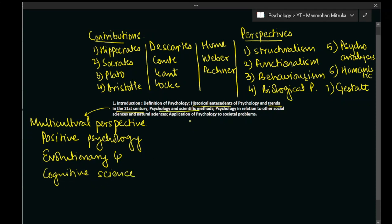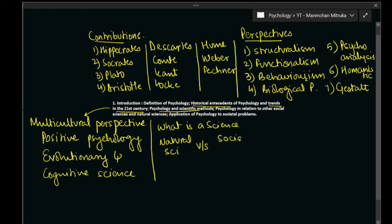The next topic is psychology and scientific methods. Here we are going to understand what a science is — the difference between a natural science such as physics, chemistry, or biology, and a social science, and where psychology stands in between these two. We are going to see what makes psychology more oriented towards science and what scientific methods are utilized in psychology.